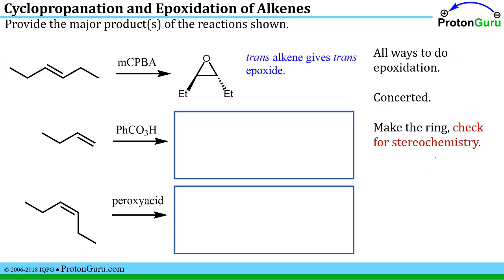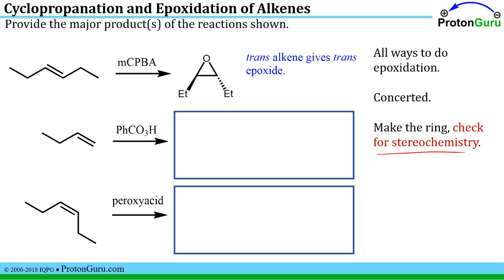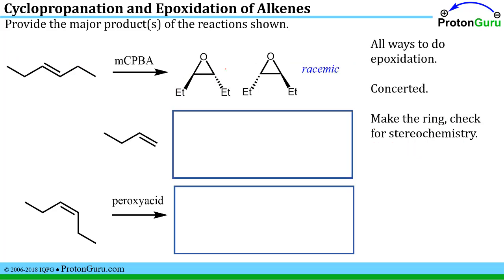For the first one we have a trans alkene, so these ethyl groups started out trans and are going to give us a trans epoxide. We check for stereochemistry: we have an achiral starting material and we generated stereocenters, so we need a racemic product. We have two stereocenters with the same different substituents, but there's no symmetry because they point in different directions — so we have two different enantiomers in equal amounts. That's the definition of a racemic mixture.